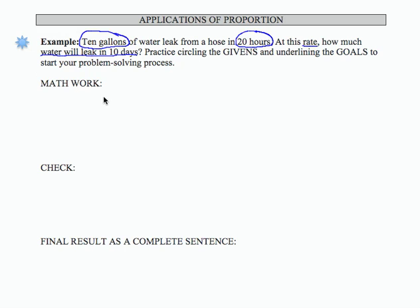So our math work here: I've been given three pieces of information, and there's one piece of information that is missing. Let's see how we can set up a proportion to solve. I've got 10 gallons leaks in 20 hours. And my question is, how many gallons will leak in 10 days?